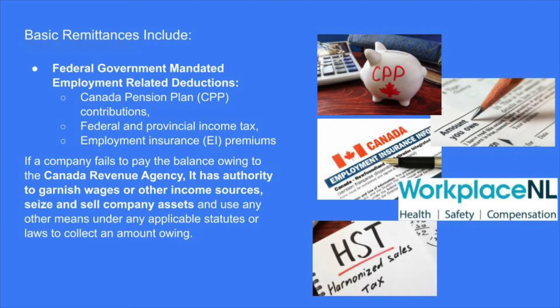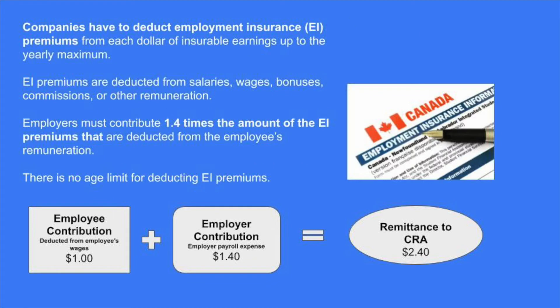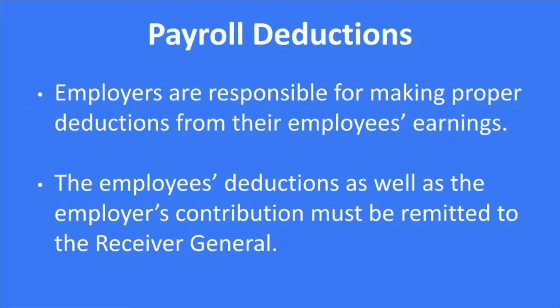In addition, employers are also responsible for their mandated share of contributions to EI and CPP and other contracted employee benefit contributions. If you're an employee, you're seeing stuff coming out of your paycheck, but the employer contributes as well. In the case of Canada Pension Plan, the employer pays one-to-one — for every dollar you pay, the employer pays a dollar. In the case of employment insurance, for every dollar you pay, the employer pays a dollar forty.